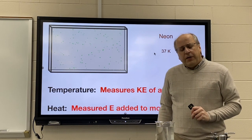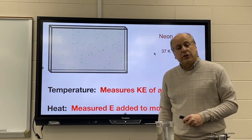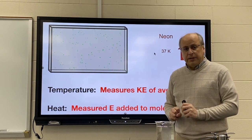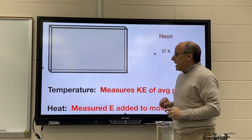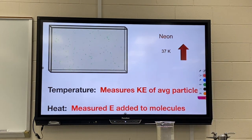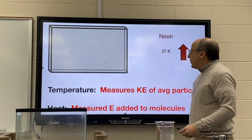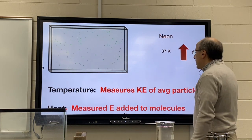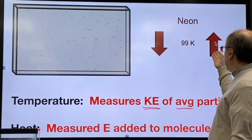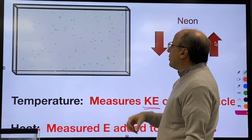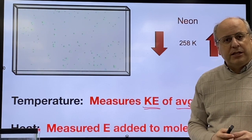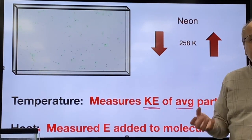Before we go any further, I want to make sure we understand the distinction between the two most important terms in Unit 5: temperature and heat. Temperature measures the average kinetic energy of the molecules that make up a substance. If I have a fish tank full of air, the air particles are not sitting still but are in random motion. Temperature measures the average kinetic energy of those particles. As I raise the temperature of the system, the particles have more and more kinetic energy — temperature is directly related to average kinetic energy. Higher temperature means higher average kinetic energy.